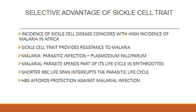There is a selective advantage of having the sickle cell trait. In Africa, the incidence of sickle cell disease coincides with the high incidence of malaria. Sickle cell trait provides resistance to malaria, which is a parasitic infection brought about by Plasmodium falciparum. This malaria parasite spends part of its life cycle in the erythrocytes. The shorter RBC lifespan interrupts the parasitic life cycle, and sickle cell hemoglobin therefore affords protection against malaria infection.